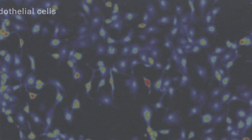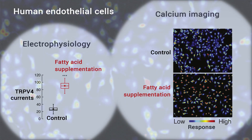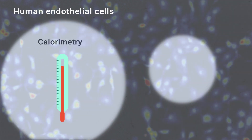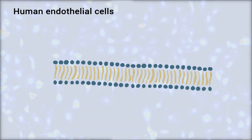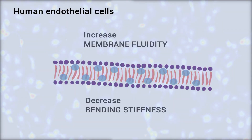We demonstrate that omega-3 fatty acids enhance TRPV4 function in human endothelial cells and support the hypothesis that lipid metabolism and membrane remodeling regulate cell reactivity. Furthermore, using calorimetry and atomic force microscopy experiments, we revealed that omega-3 fatty acids increase membrane fluidity and decrease bending stiffness.